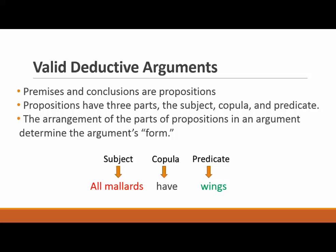Subjects are what the propositions are about. Predicates are some characteristic of the subjects, and copula express the connection between the two. Copula is Latin for link or tie, and the Latin plural is copulae, not copules. In this example, the subject is mallards and the predicate is wings. The copula links them, so the proposition says that mallards have the characteristic of having wings.